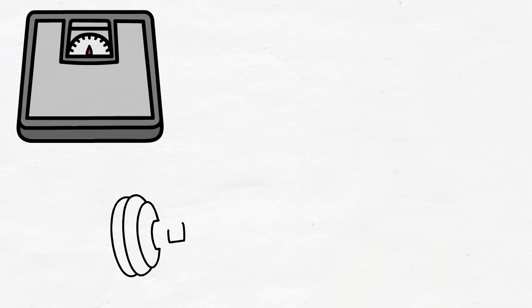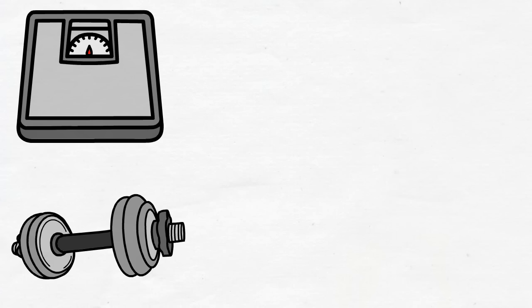For example, losing 20 pounds is a goal. Eating healthy and exercising regularly, that's a system.